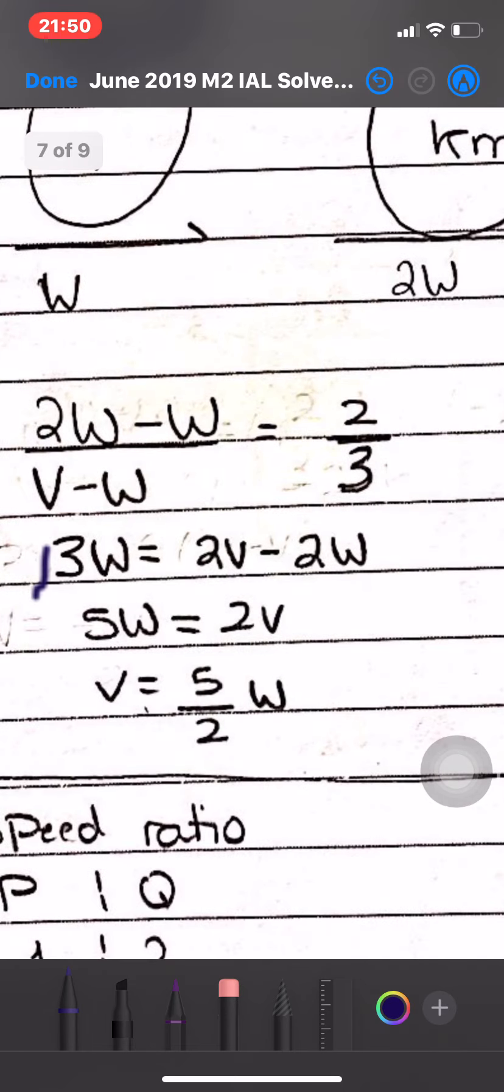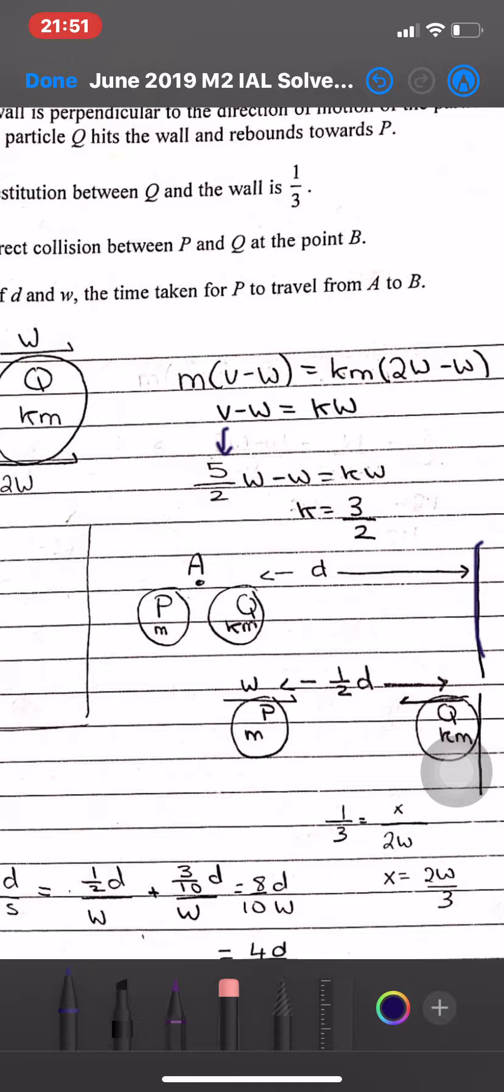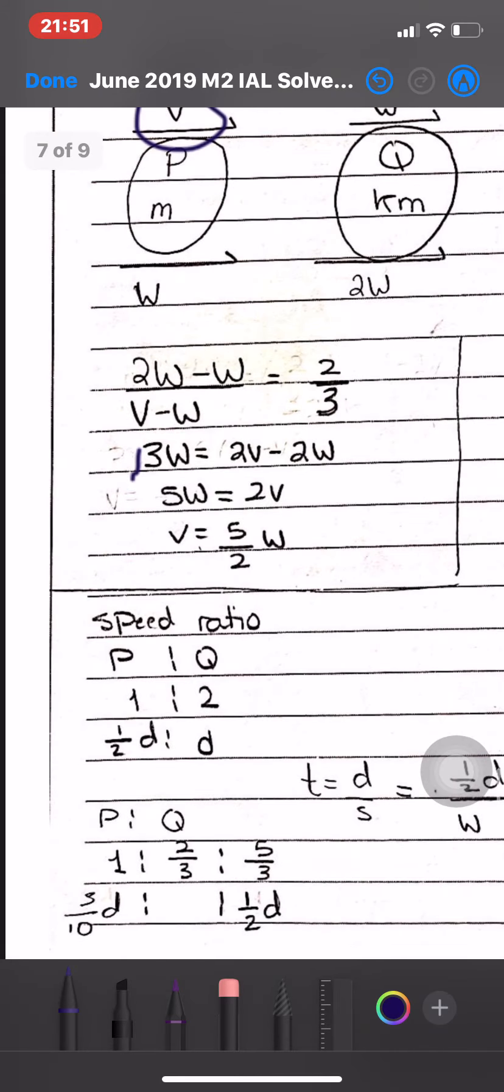When particles P and Q collide, they are at point A which is at distance D from a smooth fixed wall. So when they collide, the distance between them and the wall is D. After the collision with P, particle Q hits the wall and rebounds towards P.